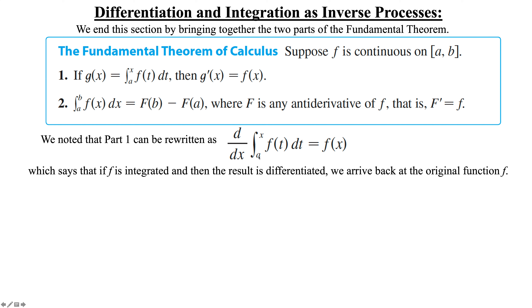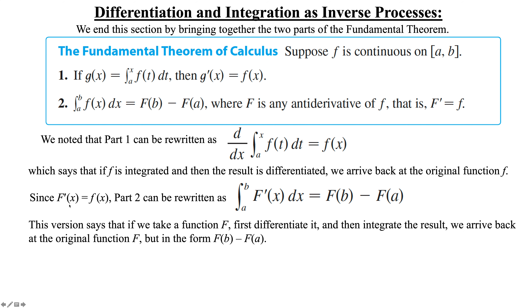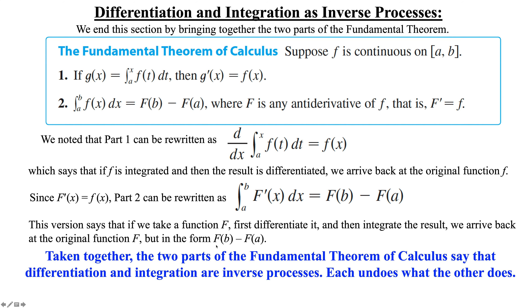Again, we're going to have that constant where we take the derivative and get zero. In part 2, since F prime of x is equal to f of x, we integrate to get capital F, we just integrate from b to a. These are going to undo each other just like the cube root of x undoes x cubed.